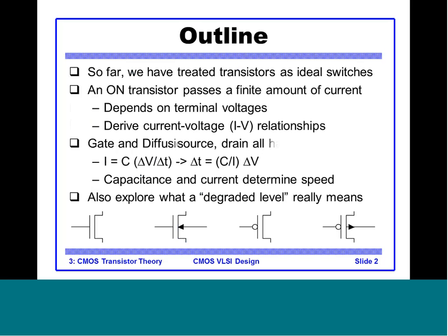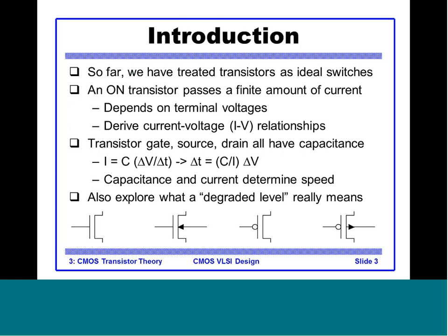In the last lecture we saw the application of MOS as an ideal switch — that was just an introduction. We saw how the switch behavior can be utilized to construct gates. Now the transistor in the ON state will pass a finite amount of current which will depend on the terminal voltages, such as VDD.